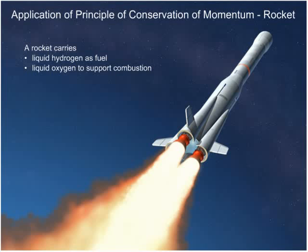The mixture of hydrogen and oxygen fuel burns in a place called the combustion chamber. During combustion, hot gases are produced. The hot gases are expelled through the exhaust at very high speed. This produces a high momentum backwards.